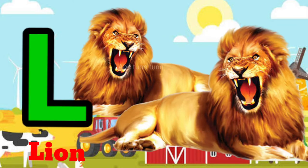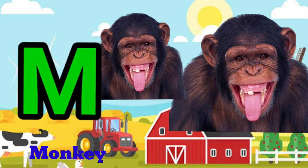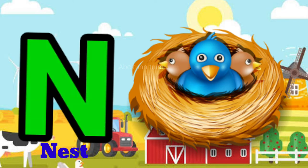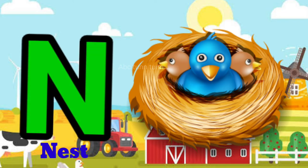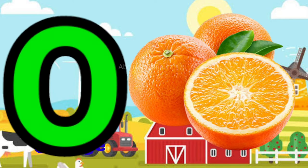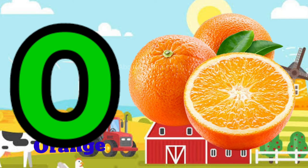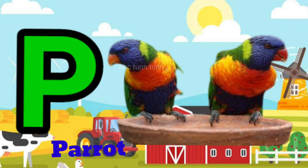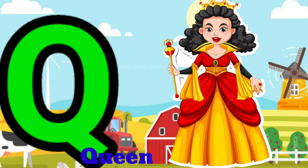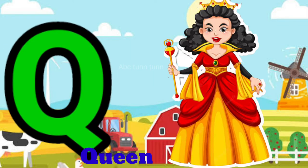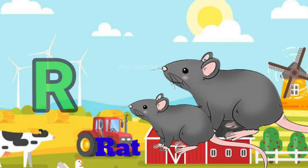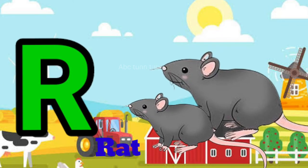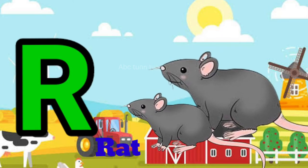L for lion. M for monkey. N for nest. O for orange. P for parrot. Q for queen. R for red.